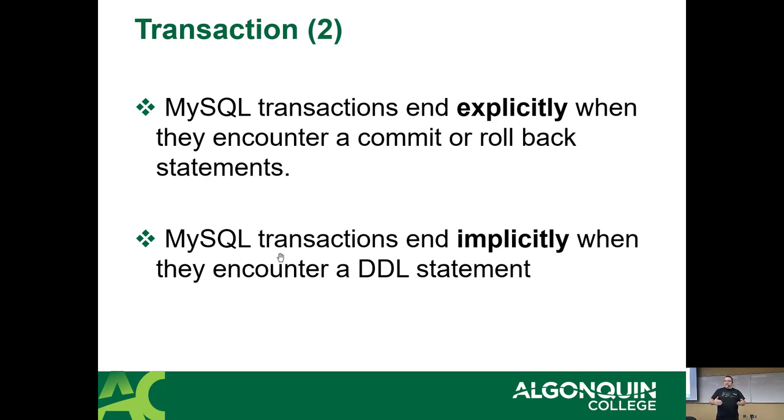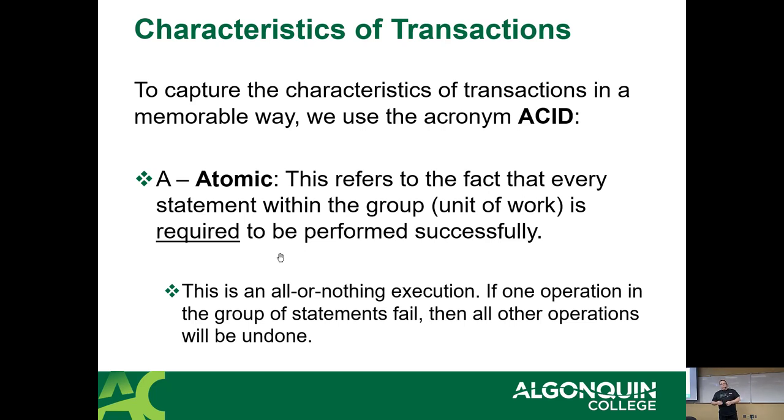So MySQL transactions end explicitly whenever they see a commit or a rollback. A transaction will end implicitly if they issue a DDL command. So for example, you do insert, insert, update, insert, update, delete, and then you alter table. Even if you had started a transaction, it will automatically commit at that point because you're changing the structure of the database. And a transaction cannot survive the changing of the structure of the database.